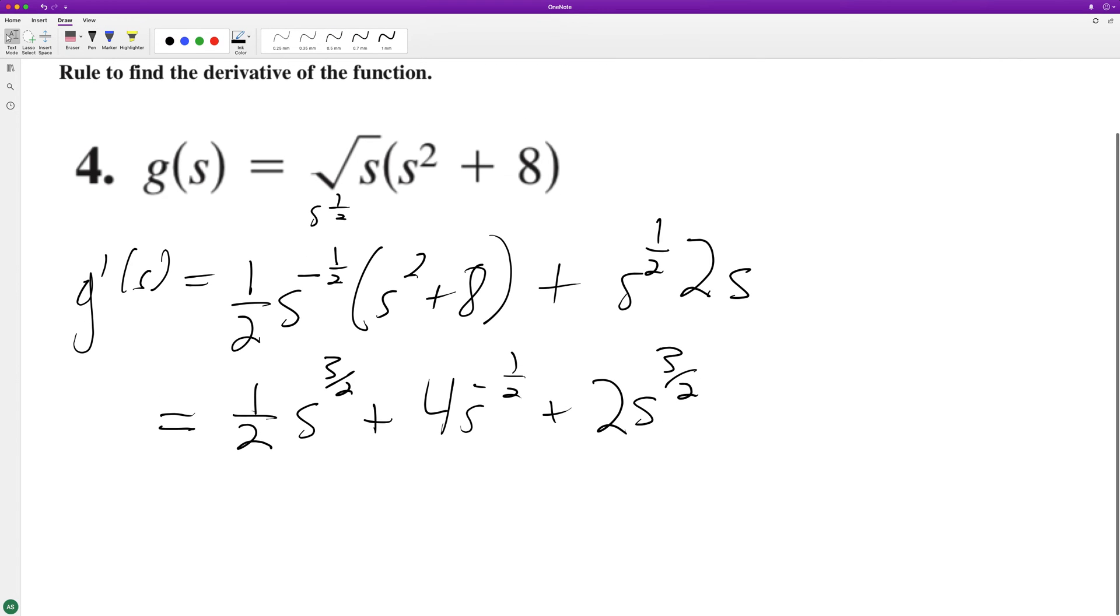So we end up with combined like terms: five halves—one half plus the two—S raised to the three halves, and then plus four over the square root of S.